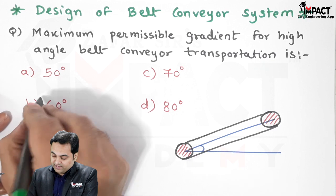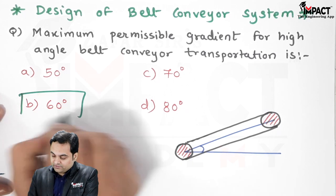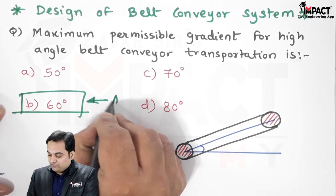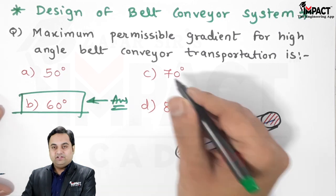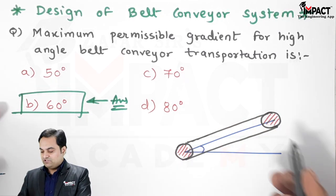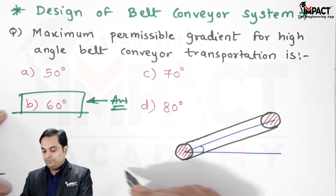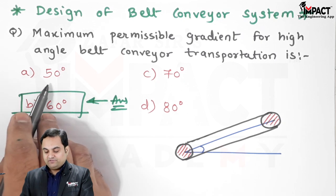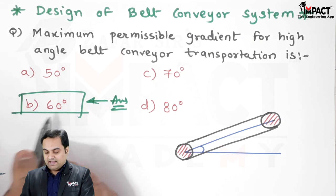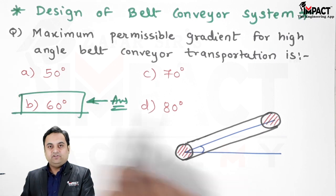That's the correct answer. B is the correct option, because if the angle is greater than 60 degrees, like 70 or 80, obviously the material will fall from the conveyor belt. Up to 60 is the limit - 50 degrees is permissible, and beyond 60 degrees we cannot go.